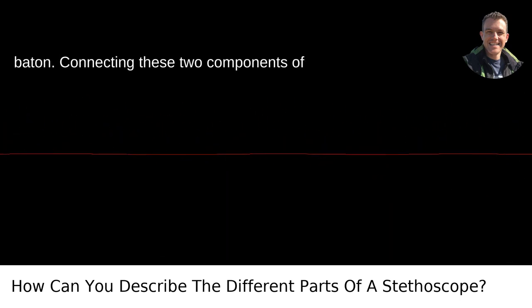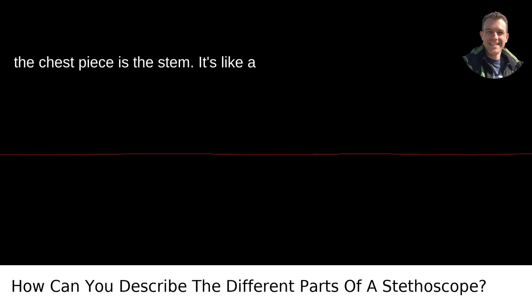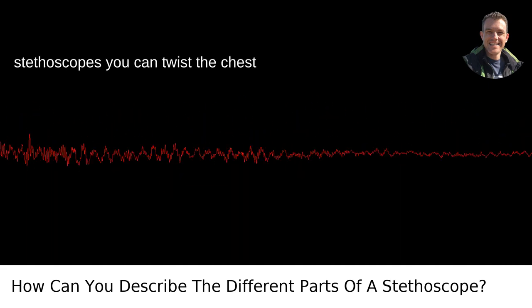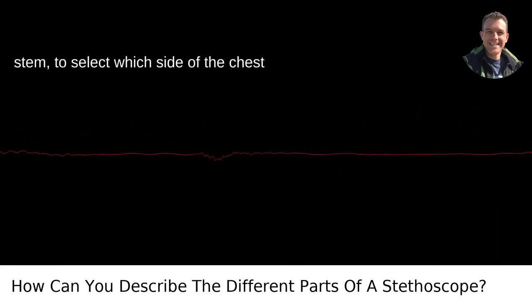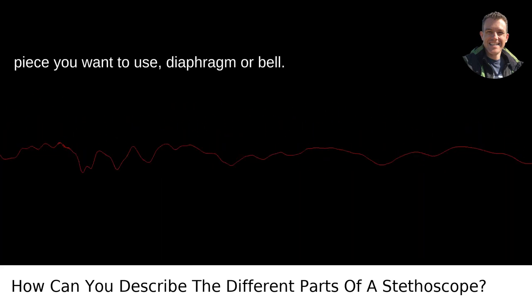The stem, the conductor's baton. Connecting these two components of the chest piece is the stem. It's like a traffic cop for sounds. It directs the traffic up to your ears. On many stethoscopes, you can twist the chest piece, using a little mechanism in the stem, to select which side of the chest piece you want to use, diaphragm or bell.